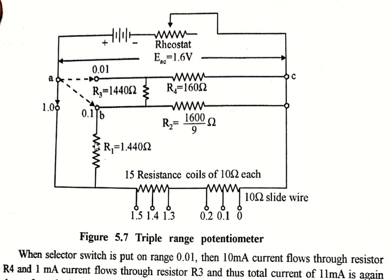0.9mA will be flowing through R2 and the remaining current will be flowing through R1. As the current flowing through the measuring circuit of potentiometer is 0.1mA, the potential range is reduced to one-hundredth and the voltage will be 0.016V.